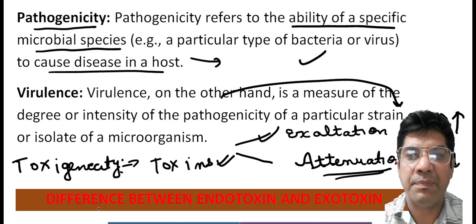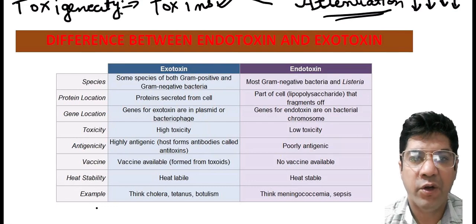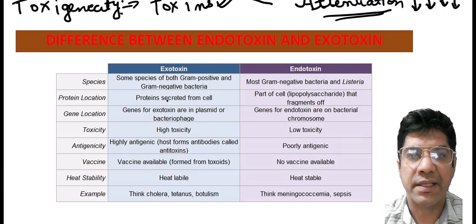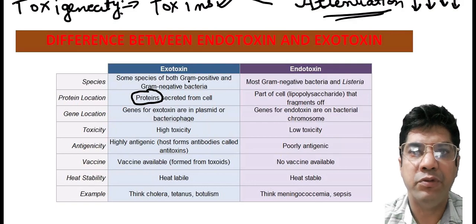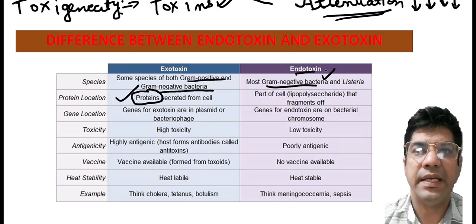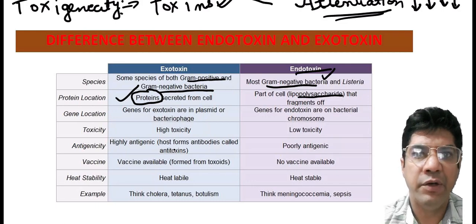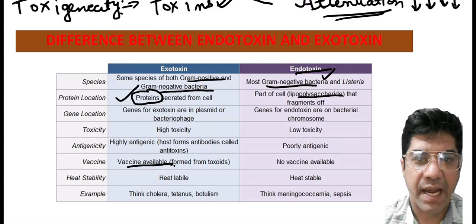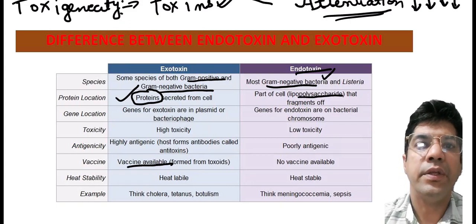Important distinctions: exotoxins are proteins produced and secreted by certain species of bacteria — they are produced by both gram-positive and gram-negative bacteria. Endotoxins are produced by gram-negative bacteria. Exotoxins are proteins whereas endotoxins are lipopolysaccharides. Examples of exotoxins include tetanus toxin and botulism toxin. Exotoxins can be treated with formaldehyde to yield toxoids, which are non-toxic.